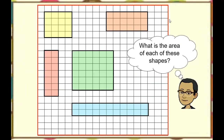We have an example here. This is a square — counting the squares gives us 16: four along one side and four along the other. So four times four is 16 centimeters squared.